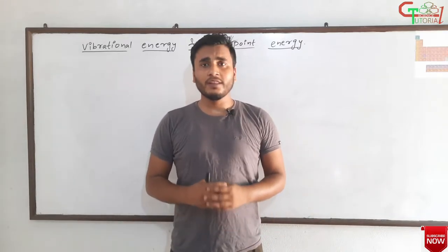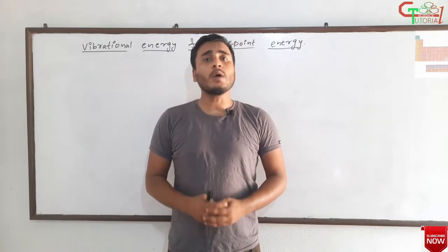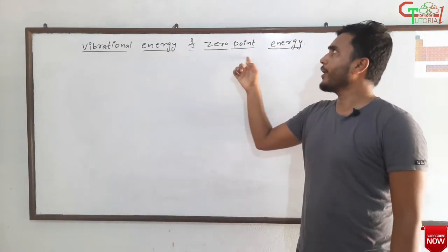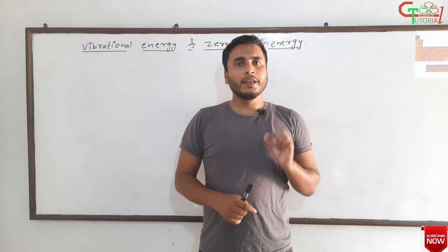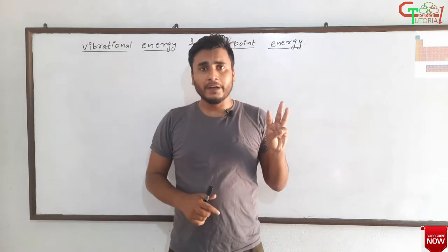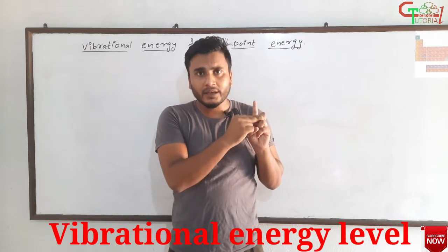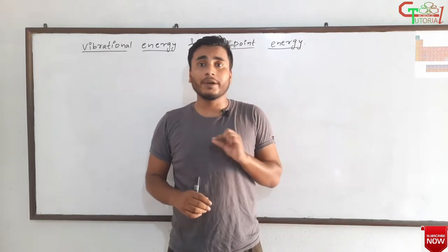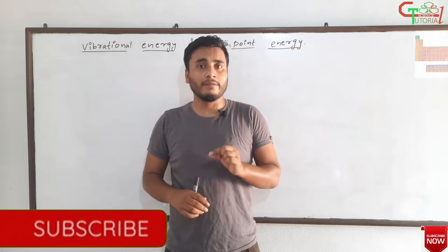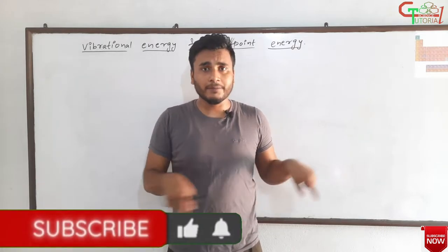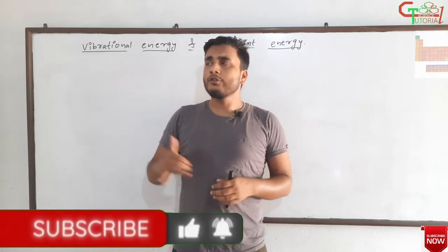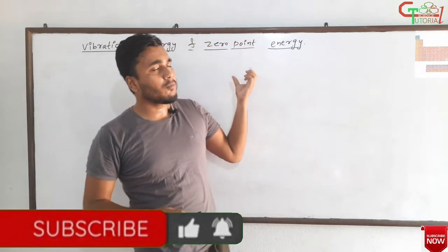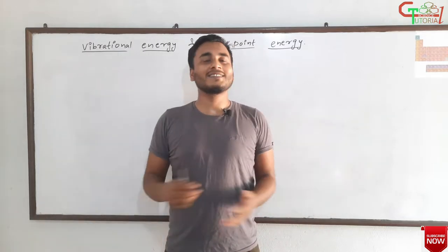Hello friends, welcome to GT Science Tutorial. In this video, I am going to explain about vibrational energy and zero point energy. We know that in a molecule there are three types of energy levels: rotational energy level, vibrational energy level, and electronic energy level. In my previous video, I have already explained about rotational energy level. You can find the link in the description below. In this video, we need to talk about the vibrational energy level — its formula — and then we will talk about zero point energy. So let's start.